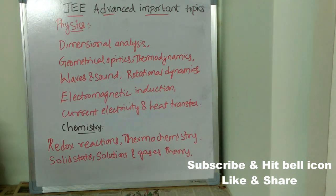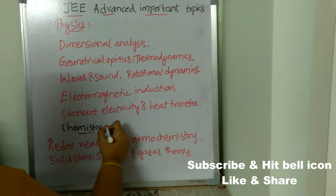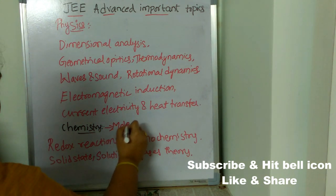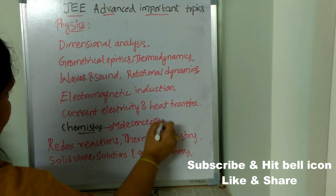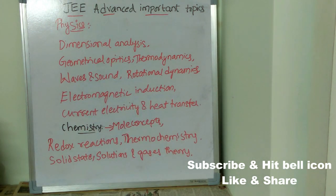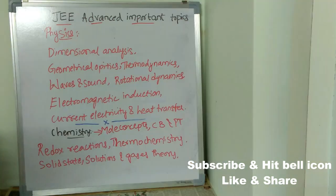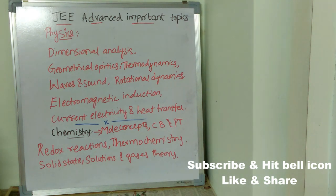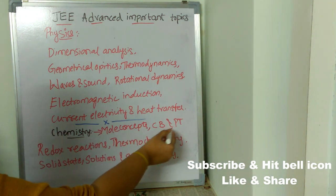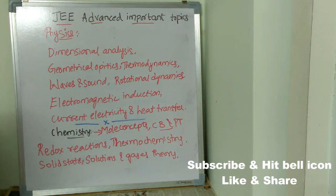Continuing chemistry topics: model concepts, chemical bonding, and periodic table. CB stands for chemical bonding and PT stands for periodic table. Just take a quick screenshot so we can move forward with important topics from mathematics.